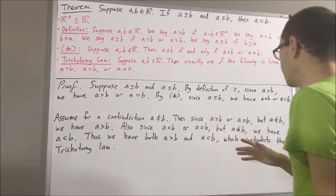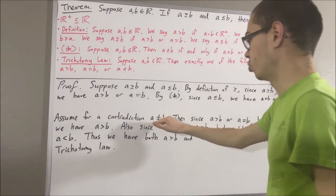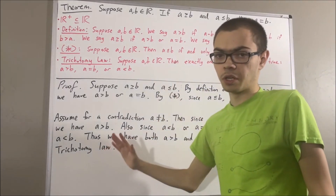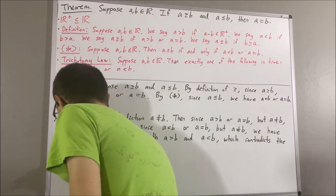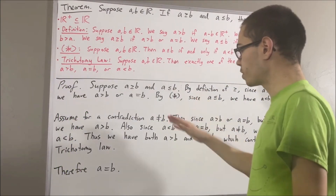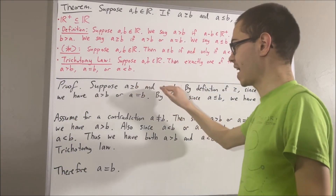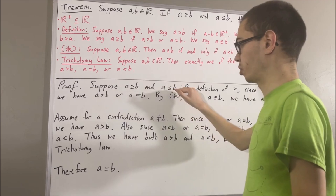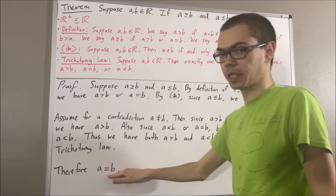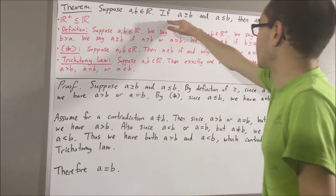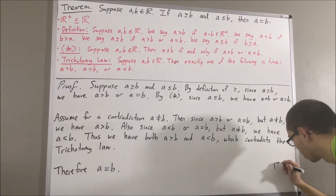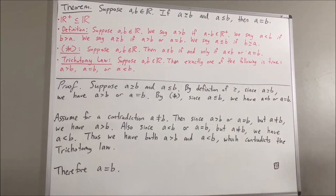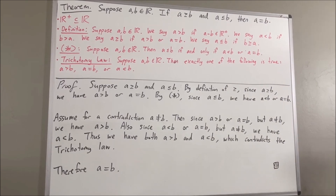Our assumption that a is not equal to b led us to a contradiction. So we must instead have that a is equal to b. And so we have shown: if a is greater than or equal to b and a is less than or equal to b, then a is equal to b. And that is exactly what we wanted to prove. So this completes the proof. And that's pretty much it for this video.